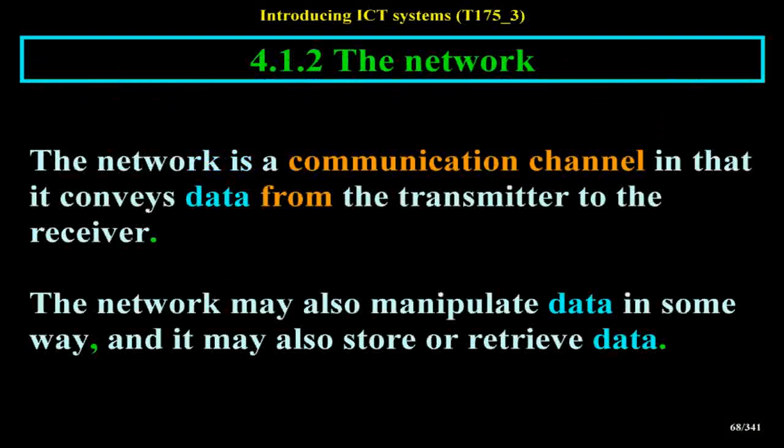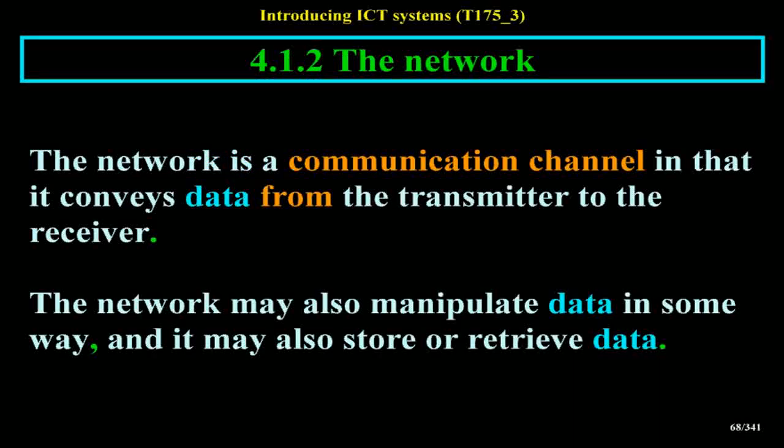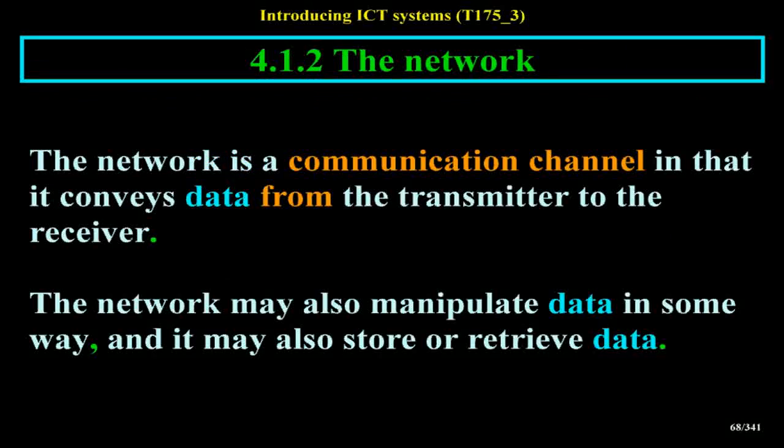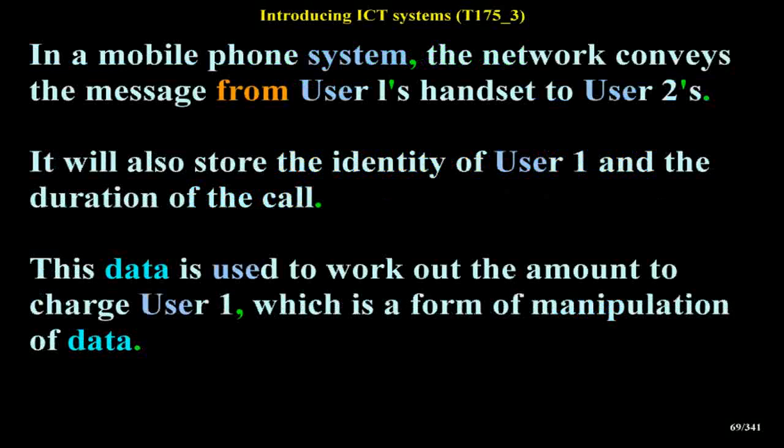The network is a communication channel in that it conveys data from the transmitter to the receiver. The network may also manipulate data in some way, and it may also store or retrieve data. In a mobile phone system, the network conveys the message from user 1's handset to user 2's. It will also store the identity of user 1 and the duration of the call — this data is used to work out the amount to charge user 1, which is a form of manipulation of data.